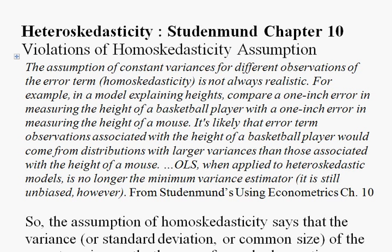Basically what Studentmund is saying is that if your dependent variable is heights, then it doesn't really make sense that that additive error term — that common-sized error added or subtracted to our predictions to get the actual values — comes from the same distribution many times. A common example is when your dependent variable is income. It's pretty easy to predict incomes of people with low amounts of education and experience. Most people just starting out with a high school degree are going to make somewhere between ten thousand and twenty thousand dollars to start, so that additive error term comes from a pretty narrow distribution.